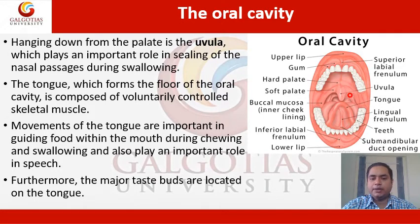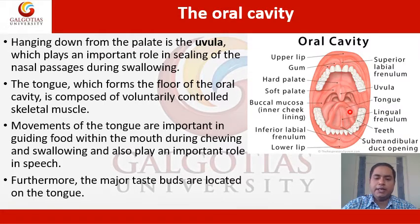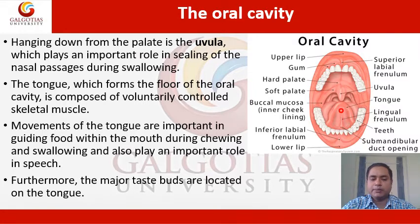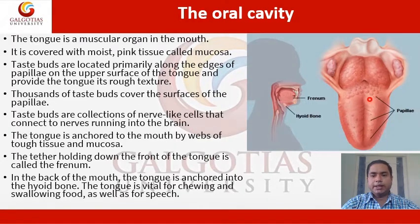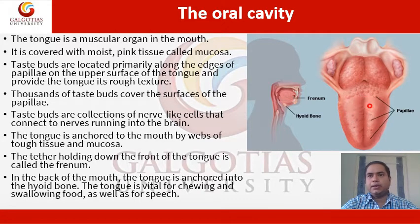The uvula plays an important role in closing the nasal passages during the swallowing process. The tongue, which forms the floor of the oral cavity, is composed of voluntarily controlled skeletal muscles. The movements of the tongue are important in guiding food within the mouth during chewing and swallowing, and also play an important role in speech. The tongue is covered with moist pink tissue called mucosa. The taste buds are located primarily along the edges of the papillae on the upper surface of the tongue.